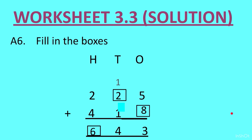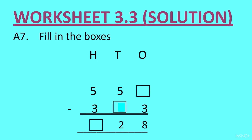Question 7: fill in the boxes — subtraction question. In the ones column: blank minus 3 equals 8, so we add 8 and 3: 8 plus 3 is 11. Write 1 here, cut 5 and make it 4, so we have 11 on top. In the tens: 4 minus blank equals 2, so 4 minus 2 is 2. In the hundreds column: 5 minus 3 is 2. This brings us to the end of the worksheet.